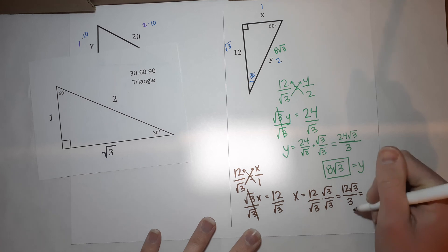Almost done. But guess what? 12 and 3 can simplify to 4 square roots of 3. And that is my X equals that.